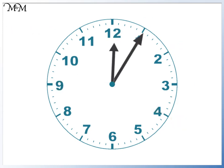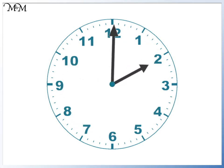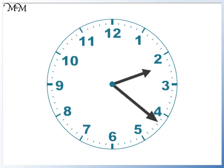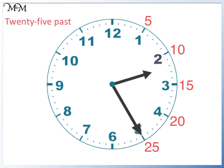This time we'll start at 2 o'clock. The minute hand moves round to 5. 5 times 5 equals 25, so 25 past. The hour hand has moved past 2, so the time is 25 past 2.